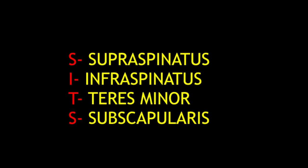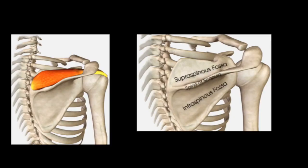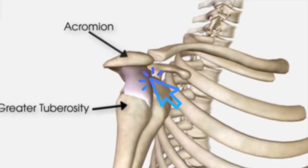S for supraspinatus, I for infraspinatus, T for teres minor, and S for subscapularis. While SIT muscles come from the posterior aspect of the scapula, the subscapularis comes from anterior to the scapula. The supraspinatus originates in the supraspinous fossa, traverses towards the greater tuberosity of the humerus going underneath the acromion, and finally attaches to the greater tuberosity at the superior facet. The infraspinatus, as the name suggests, originates from the infraspinous fossa and attaches at the middle facet of the greater tuberosity.